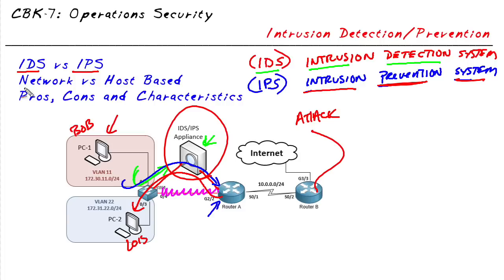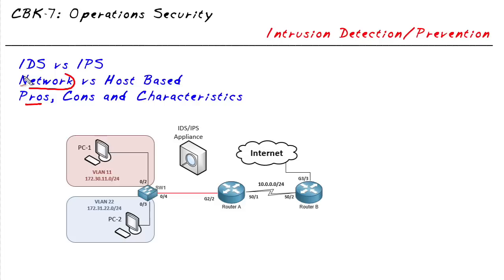These are both examples of network-based intrusion detection and prevention, because we're analyzing network traffic. One benefit of network-based IPS is that by monitoring traffic on the network, we cover a large number of computers at once. The downside is we aren't seeing what's happening locally on those computers. If an attacker is sitting locally at a computer trying to compromise it, a network-based IPS won't be able to see that local activity.